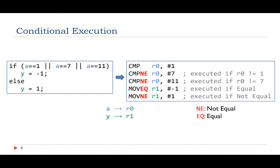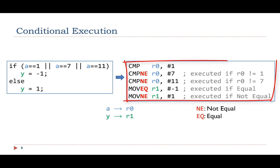Let's look at a more complex example. If A is equal to 1, 7, or 11, then Y is set to negative 1; otherwise, Y is set to 1. In the assembly program, we use three comparison instructions. The second and third comparison instructions are conditionally executed, and they have a conditional code NE (not equal).